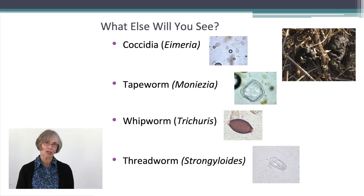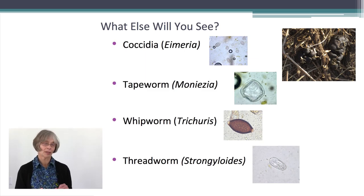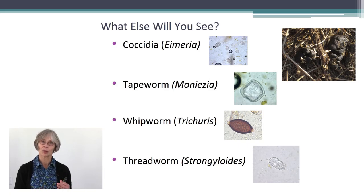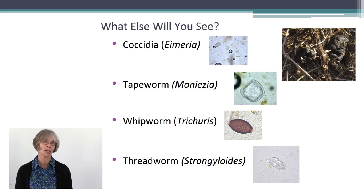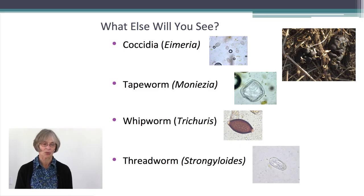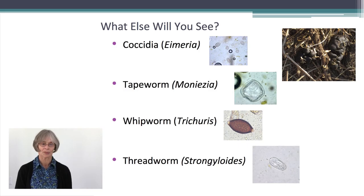When you do the McMaster's test, the flotation will also float other parasites, including coccidia and tapeworm eggs, whipworm eggs, and threadworm eggs. We'll talk about what those eggs look like so you'll be able to recognize them. But it's important to recognize that with tapeworm, whipworm, and threadworm especially, it's very unusual to see clinical problems with those animals. We're not spending much time evaluating or worrying about numbers of those worms. Coccidia are a little different and harder to interpret, but in animals with diarrhea, people will often count coccidia as well.